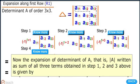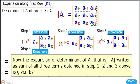Step 4: The expansion of determinant A is written as the sum of all three terms obtained in steps 1, 2, and 3 above.